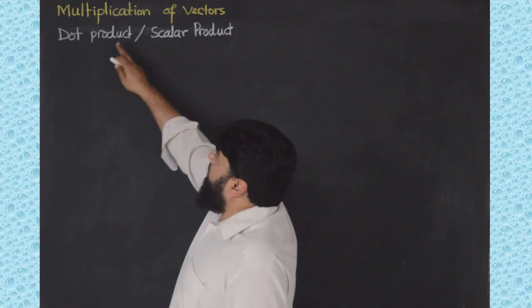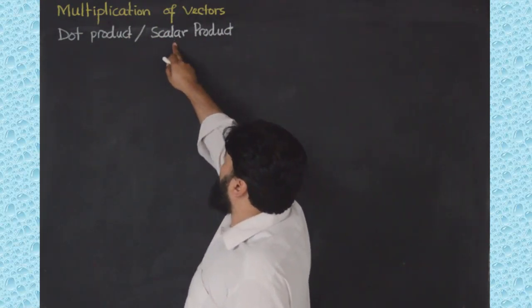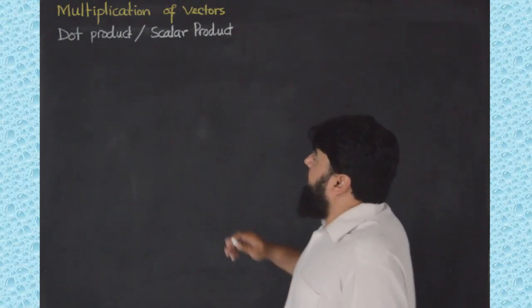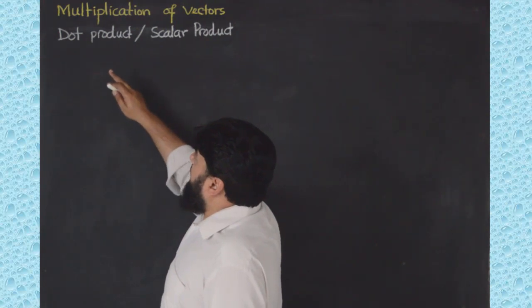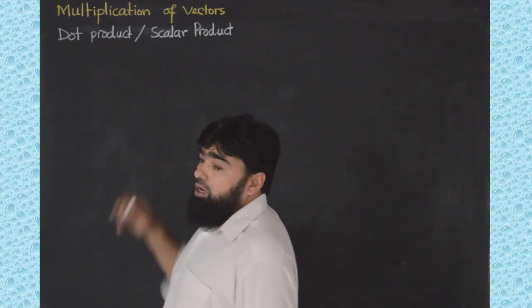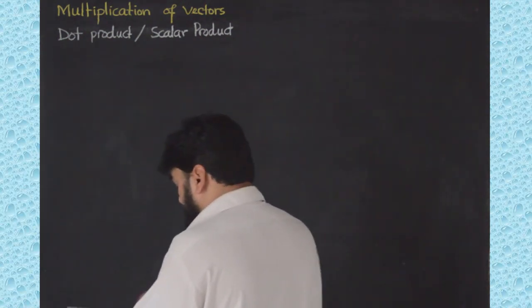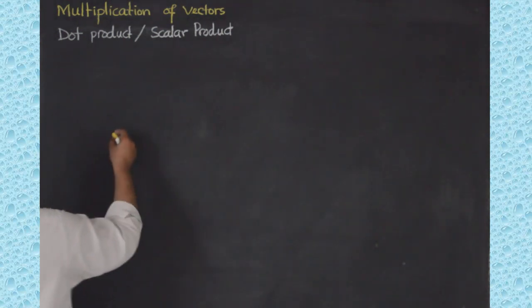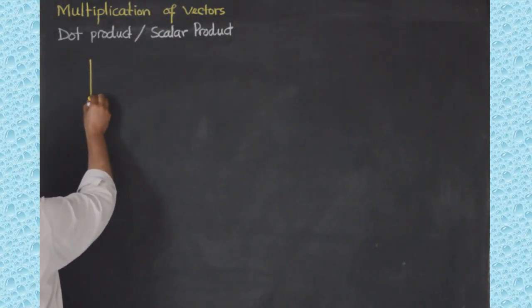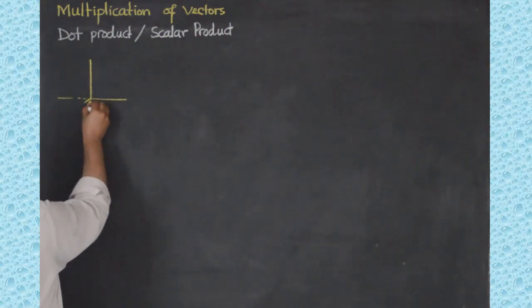In multiplication of vectors, we will discuss the dot product, which we also call the scalar product or the inner product. Two vectors can only be multiplied in two ways: either dot product or cross product. Now let me consider a coordinate system — a two-dimensional, planar coordinate system.